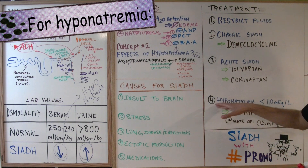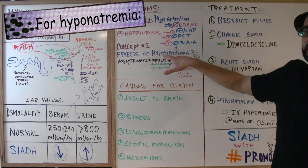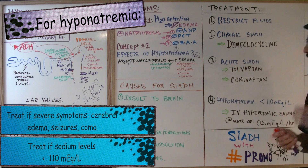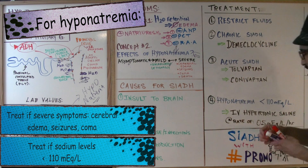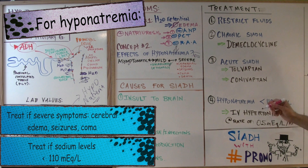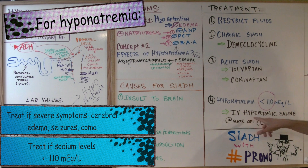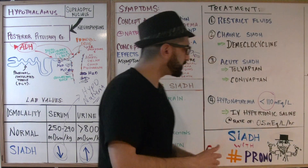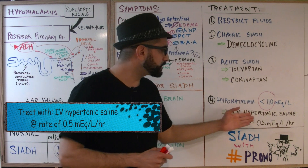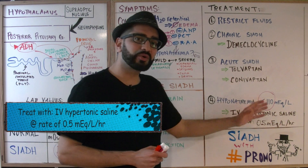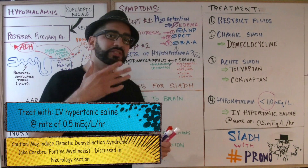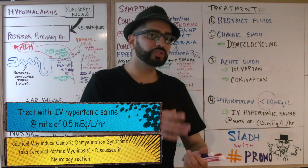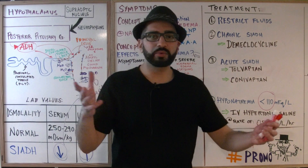An important concept regarding when to treat hyponatremia: if sodium levels fall below 110 milliequivalents per liter with severe symptoms, you must treat. Treatment consists of IV hypertonic saline. Critically, infuse it at a very slow, steady rate of 0.5 milliequivalents per liter per hour — no faster — because going faster can induce the serious condition known as cerebral pontine myelinolysis, also called osmotic demyelination syndrome.